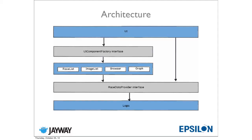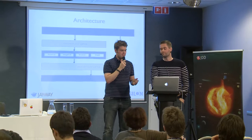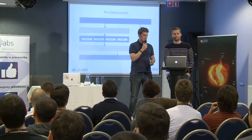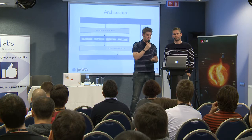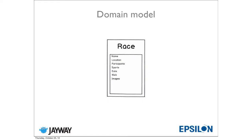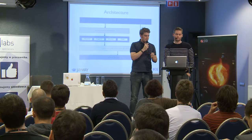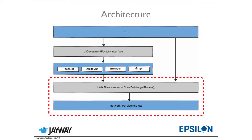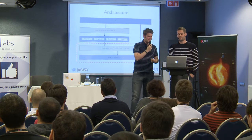Let's look at the architecture. We have the UI up top, which uses a component factory class that returns all the different lists used in the application. At the bottom we have a race data provider — an interface that wraps the persistent storage or network calls. We have a single domain object called Race, which has a title, distance, photos, and so on. The idea is to reuse the data layer at the bottom and write a new user interface.